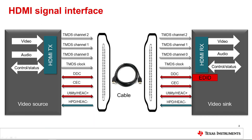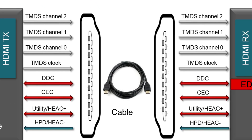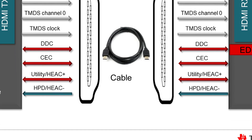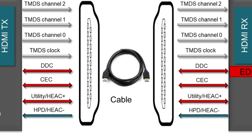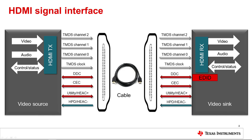There are three major signaling components for HDMI devices. The first is the transition-minimized differential signaling, or the TMDS channel, which carries video, audio, and auxiliary data. The second is the hot plug detect signal, which notifies the source that the sync device is connected. The last is the display data channel, an I2C-based communication channel. The source uses this channel to discover the sync's configuration and capabilities.